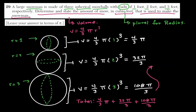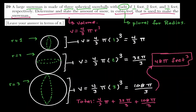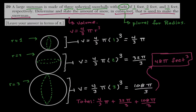The total volume is 4π/3 + 32π/3 + 108π/3, which simplifies to 48π cubic feet.